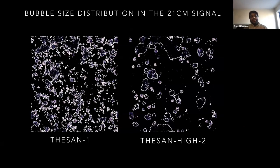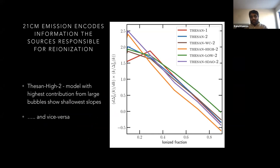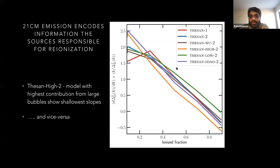We can get different reionization topologies if you have different reionization models. On the left I show a reionization model where low-mass halos contribute, and on the right where high-mass halos contribute. If you calculate the ionized fraction, it's the same in both simulations at this point in time, but the reionization topology is very, very different. So basically by measuring the topology of reionization, you can understand which galaxies are responsible for the reionization process. We quantify this by measuring the slope of the power spectrum at k = 0.2, and you can see that the different reionization models give you a different slope as a function of ionized fraction. By measuring the slope, you can constrain the different reionization histories.